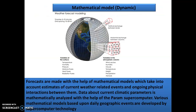The first new model is the mathematical model, also called the dynamic model. As the name says, it takes into consideration mathematical data — estimates of current weather-related events like temperature, humidity, and pressure — and the ongoing physical interactions between them. These numbers are analyzed and a mathematical model is calculated. Data about current climatic parameters is mathematically analyzed with the help of the Param supercomputer. Various mathematical models based upon daily geographical events are developed by supercomputer technology.